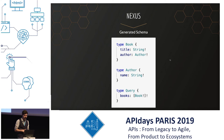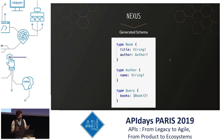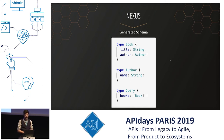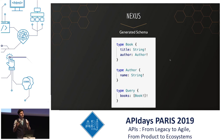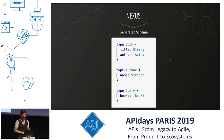Since we already have the Prisma schema and the generated Photon client, don't we already have all the information we need about the types, the attributes, and the relations? And if so, couldn't we use this directly with Photon so we don't have to rewrite them ourselves — saying again that we have a reference which is a string, an ID which is a string, etc.?